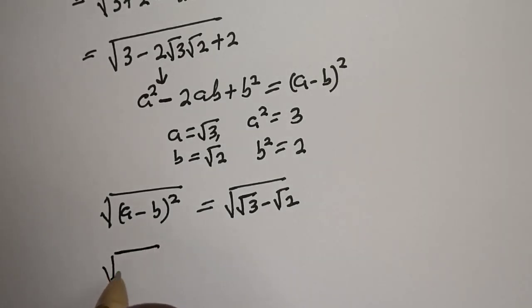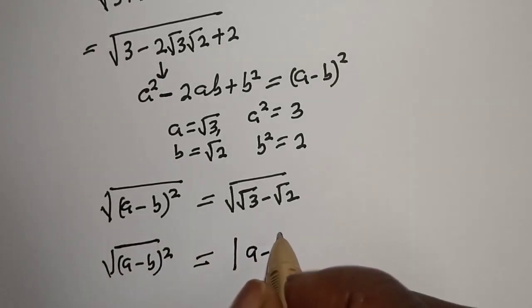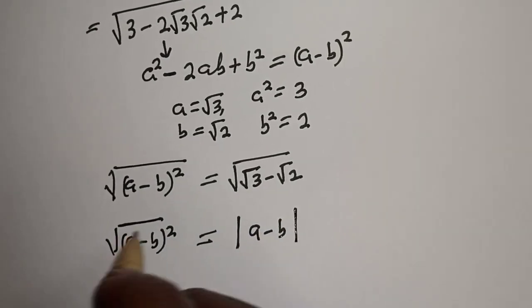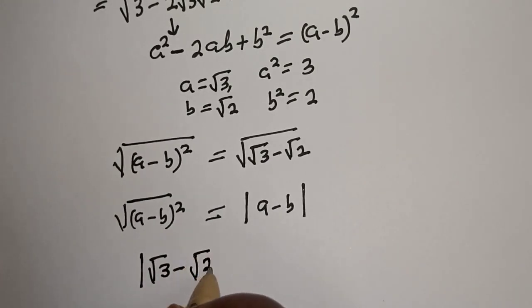Square is equal to absolute value of a minus b. So from here we have the absolute value of root 3 minus root 2.